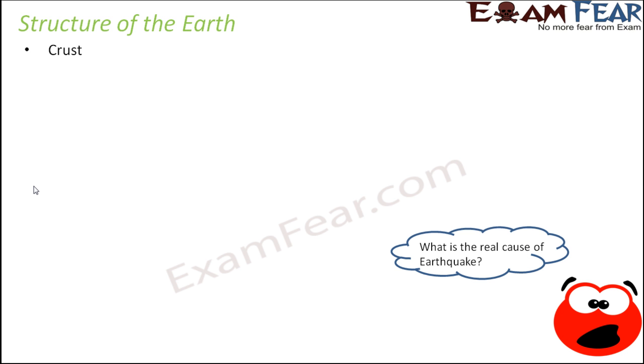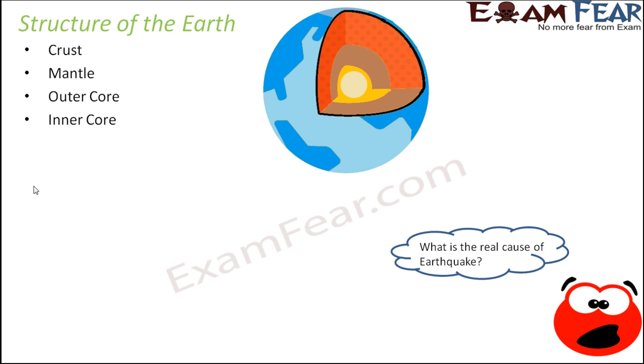Let us see what are the various layers present inside the earth. Based on the chemical composition, the structure of the earth is divided into four major layers: crust, mantle, outer core, and inner core. This is how it looks like.